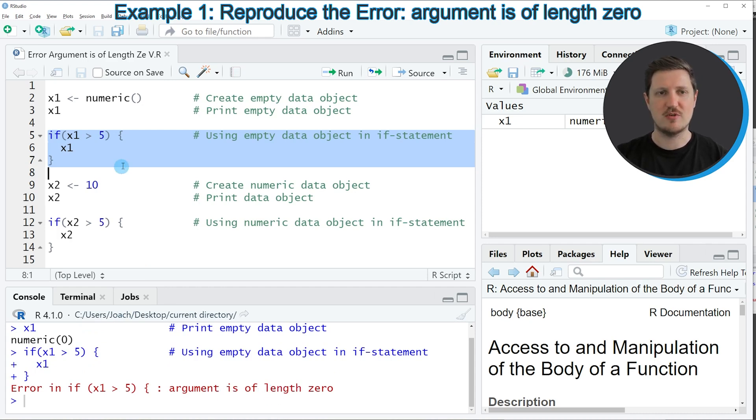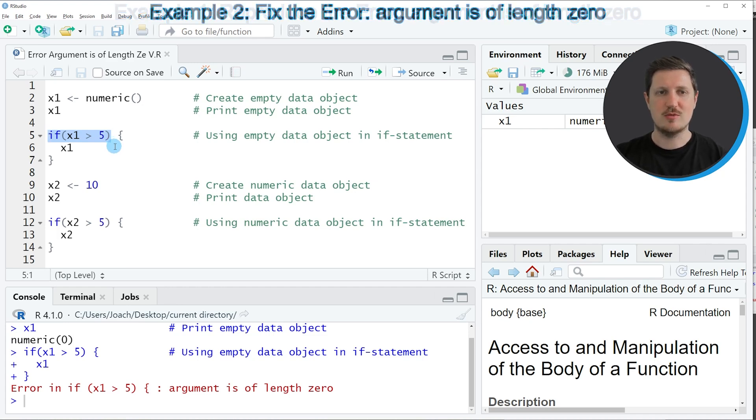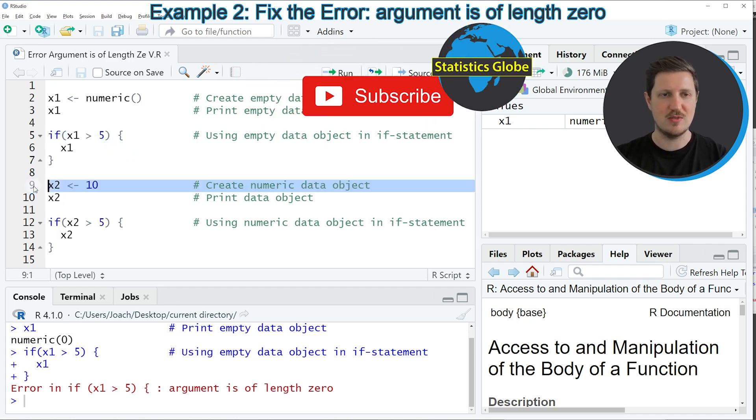The reason for that is that within an if statement, you are not allowed to use an empty data object. So if we want to fix that, we have to specify a different data object for our if condition, as you can see in the next example starting in line 9 of the code.